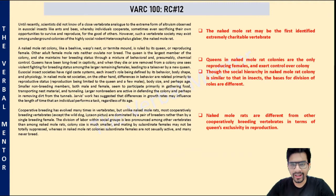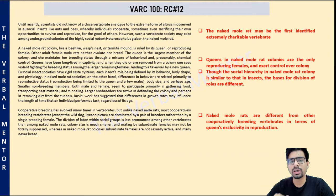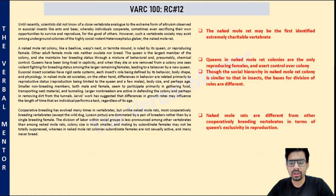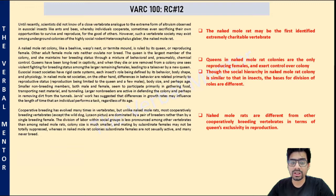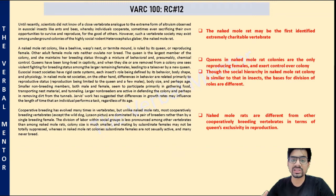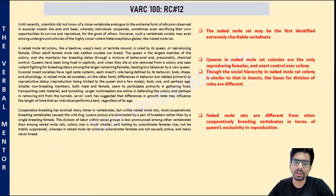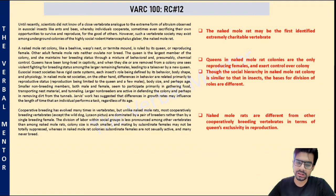While in insect societies, the division of labor is done on the basis of body shape, behavior, and other factors, in naked mole rat colonies the basis differs. So these are the differences between the basis upon which division of labor is done in these two colonies.